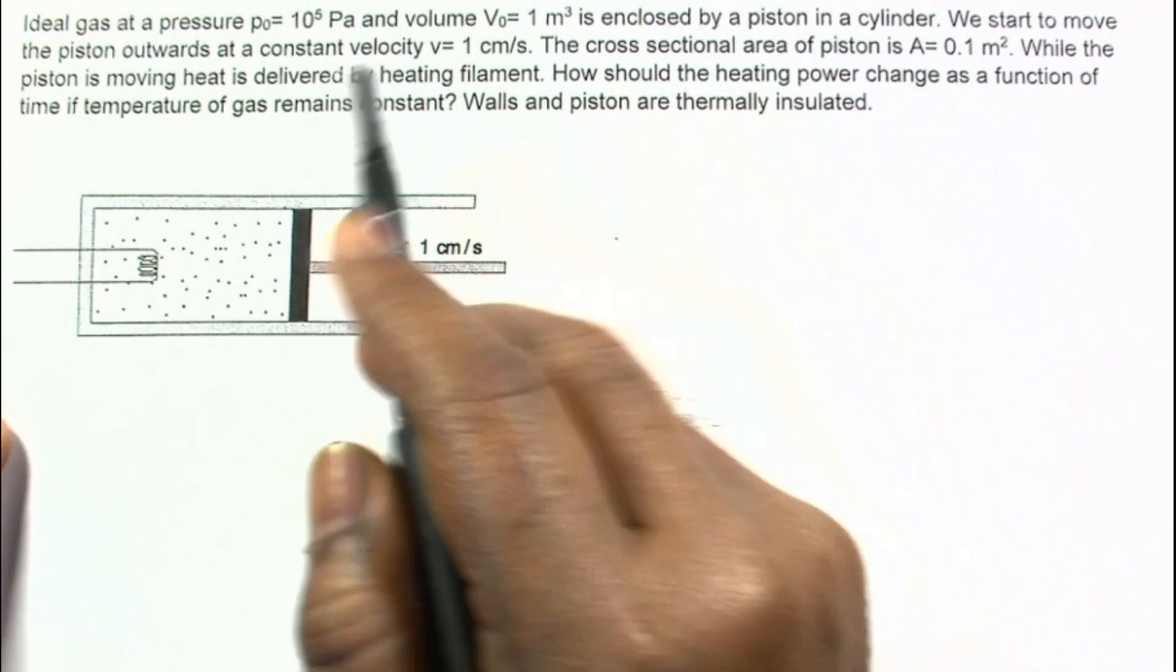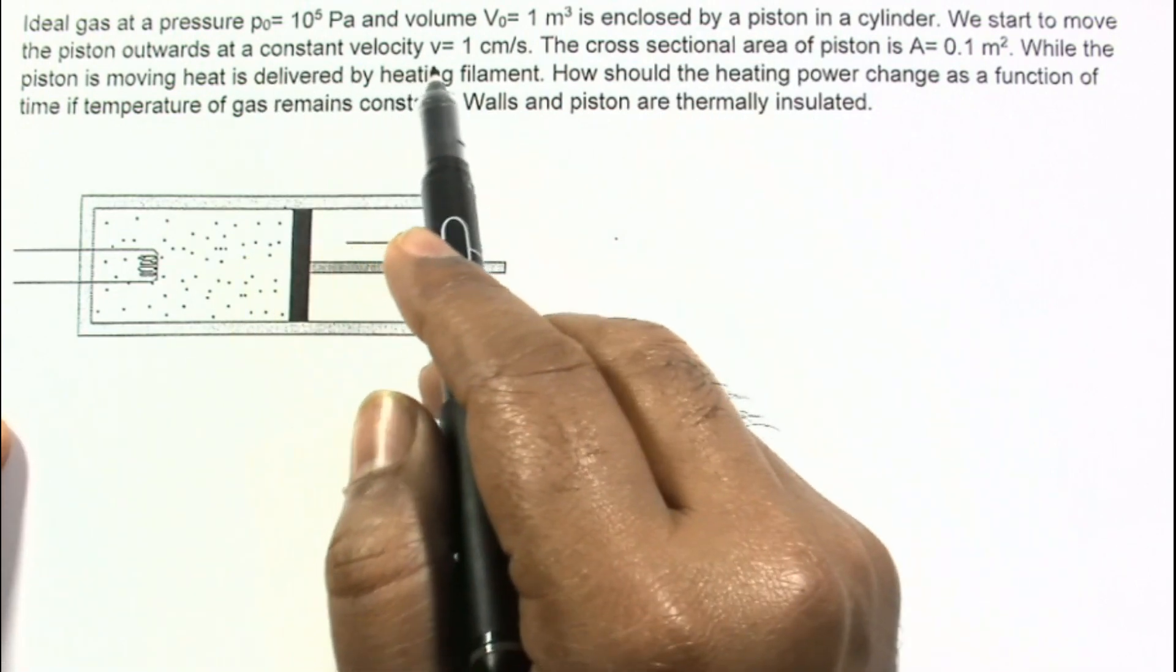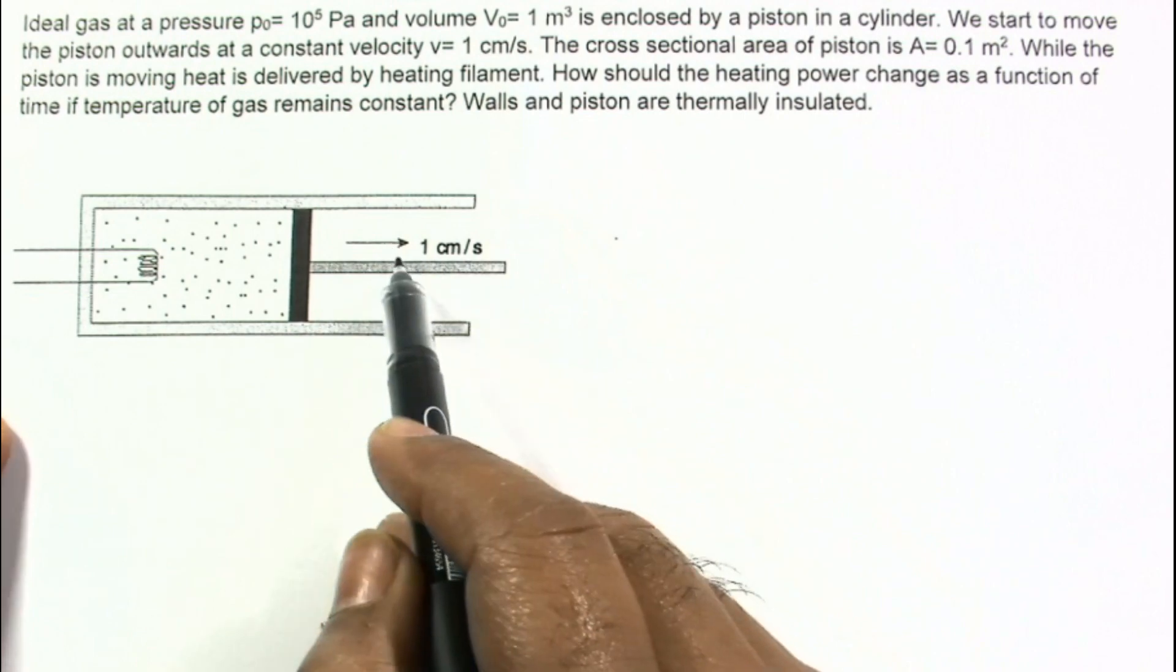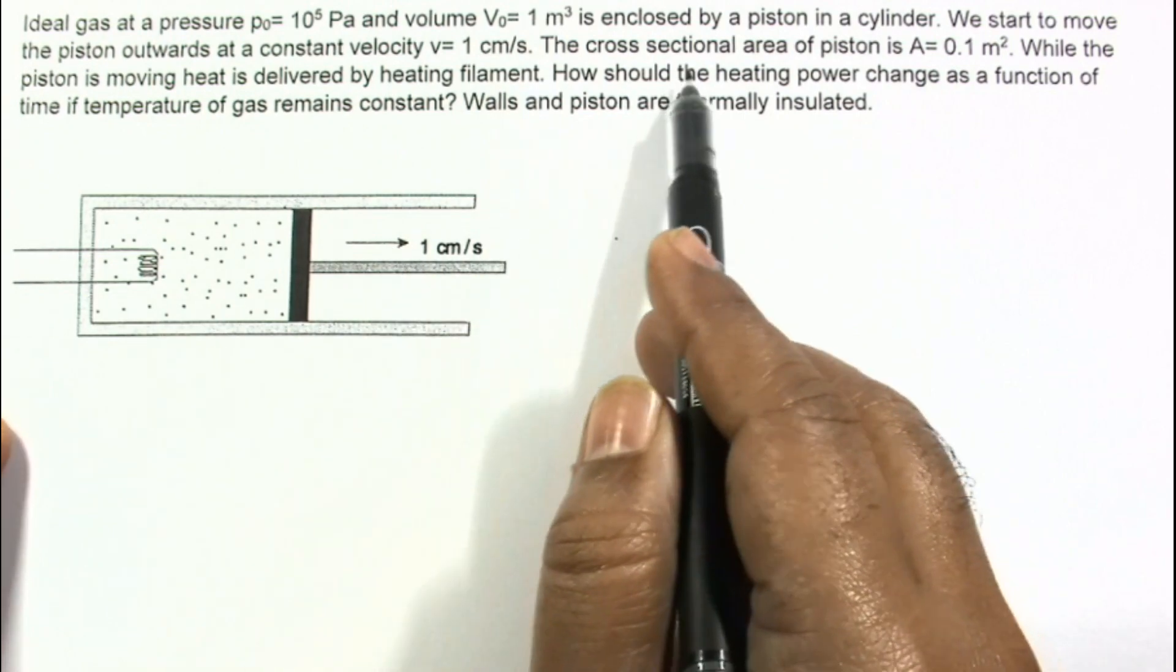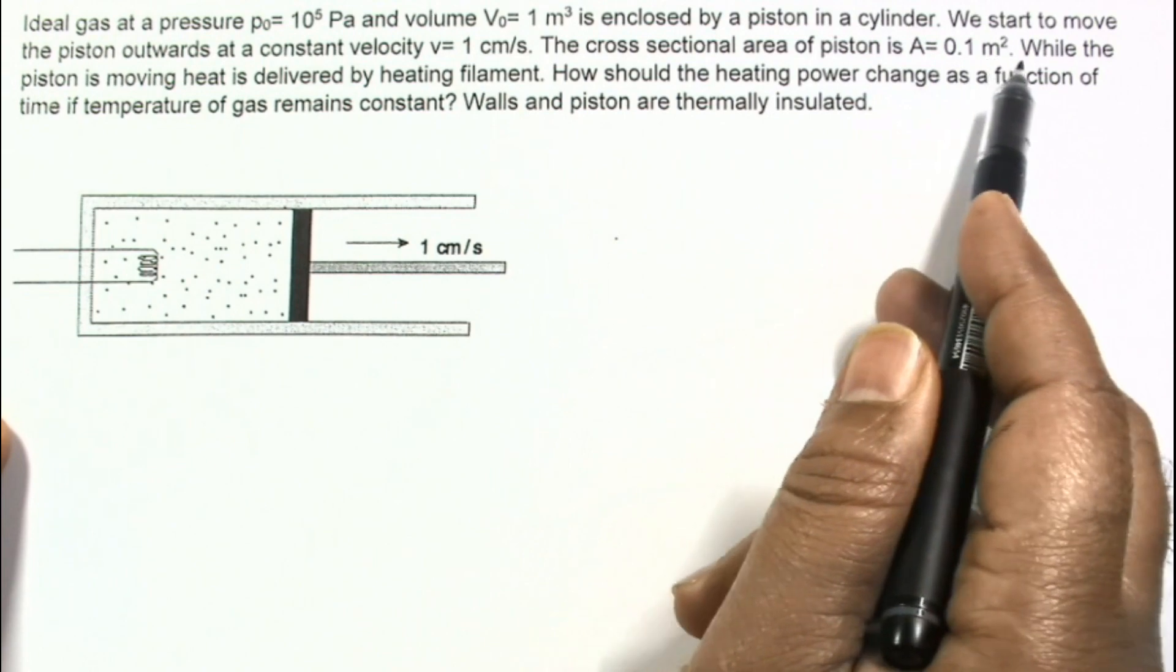We start to move the piston outwards at a constant velocity V equal to 1 cm per second. The cross sectional area of the piston is A, 0.1 meter square.